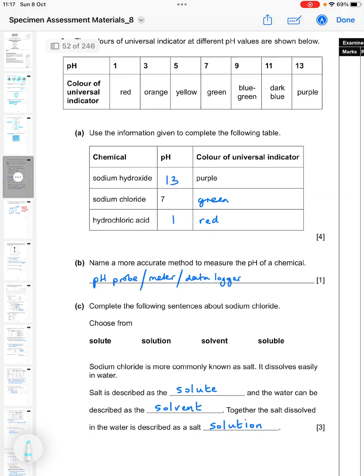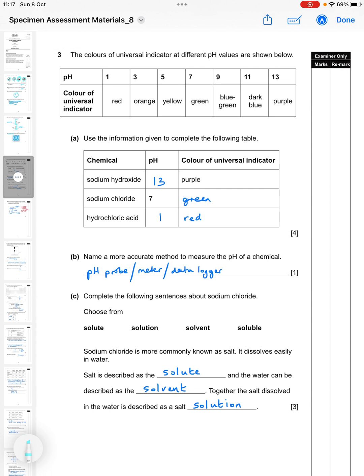Question three: the colors of universal indicator at different pH values are shown below. Use the information given to complete the following table. Sodium hydroxide and purple - you look up purple on the table and it gives you 13 for the pH. Sodium chloride then is seven, we look up seven and it's green. Hydrochloric acid then you should know as a strong acid so it's going to be one and red.